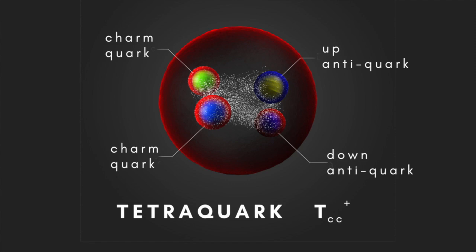Twenty years ago, physicists didn't know of any particle that contained other than two or three quarks. Then, in 2003, the first tetraquark — made of four quarks — was found. And since then, researchers have discovered a number of other tetraquarks and pentaquarks, containing four or five quarks, all as short-lived products in high-energy collision experiments.